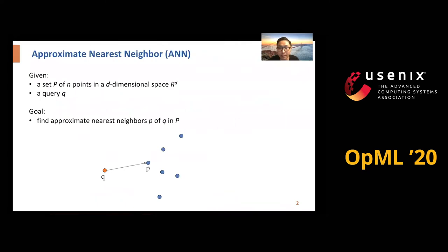Given a set of points in the d-dimensional space and a query point, our goal is to find approximate nearest neighbors in the set P.